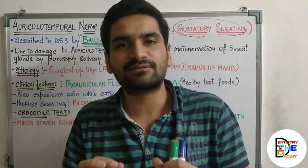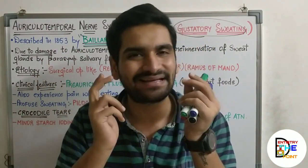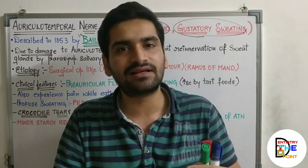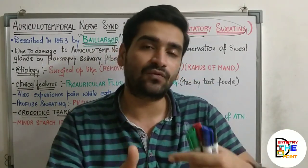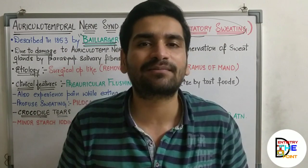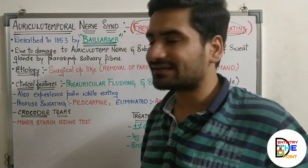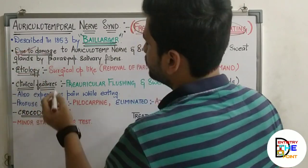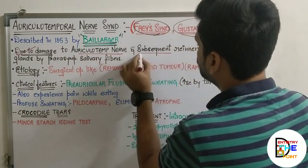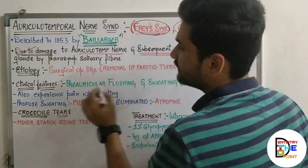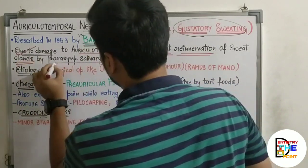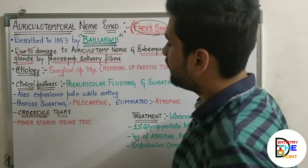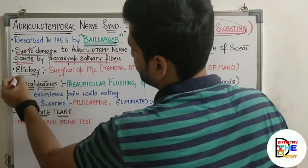So whenever the auriculotemporal nerve's parasympathetic fibers are stimulated, sweating is also generated in the same way as salivation. In summary, damage to the auriculotemporal nerve followed by subsequent re-innervation of sweat glands by the parasympathetic fibers of the salivary gland causes this syndrome. Etiology includes removal of parotid tumor or ramus of mandible, and any surgical operations related to these two parts.